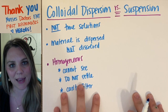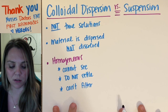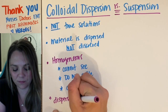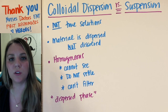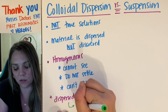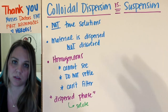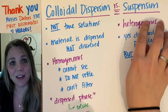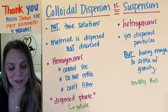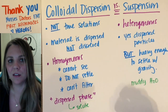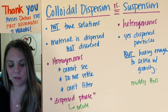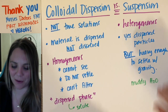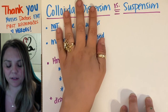Instead of calling these particles solute, we call them the dispersed phase — just a new fancy way of saying what's basically like your solute, the particles that are dispersed in this colloid, not dissolved. A good example of a colloid is milk. Milk has fat particles that are too big to actually be dissolved in the milk itself, so you have a colloidal dispersion — a dispersed phase of fat particles.